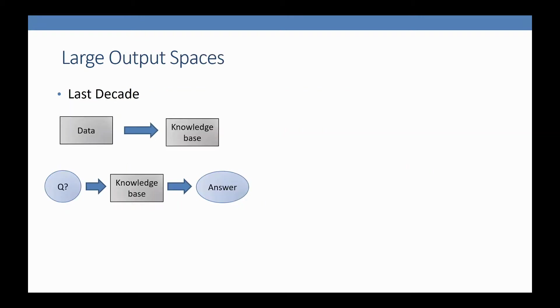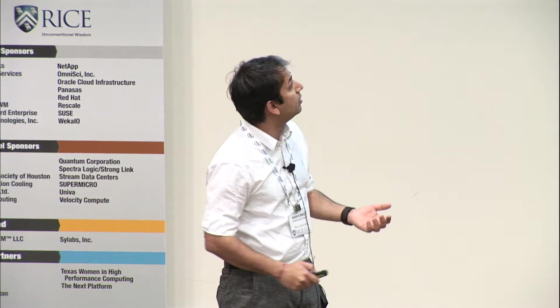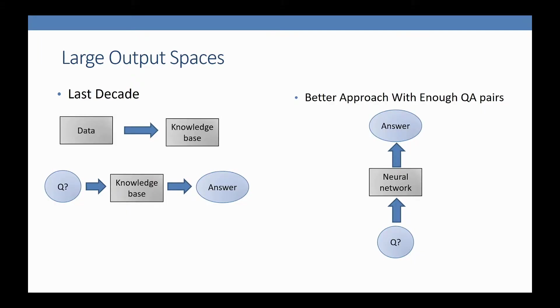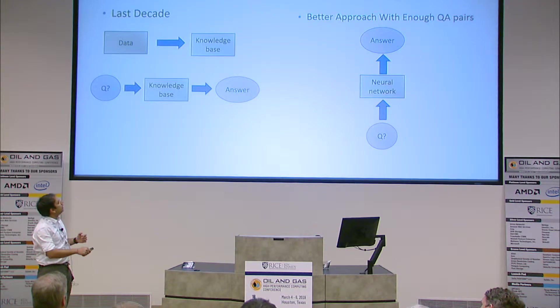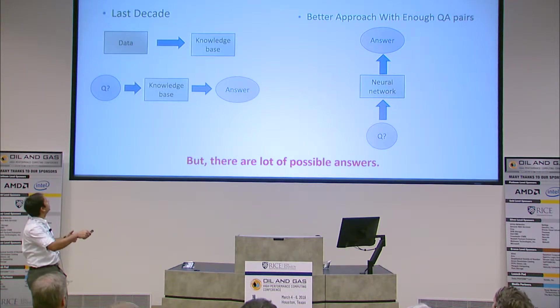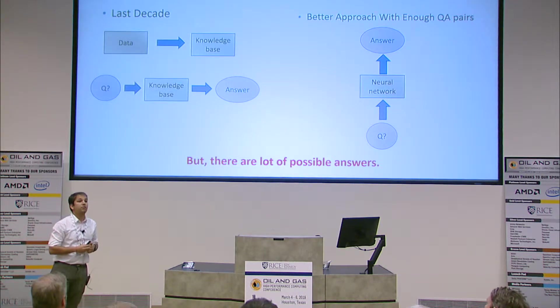In the past decade, we used to have data and create a knowledge base. If I want to do question answering, I show the question to the knowledge base and get the answer. Now this has been changing. The example is question answering and machine translation—if you have enough question-answer pairs, and enough means really large amounts, you take a very large neural network, show it enough pairs, train it, throw it at whatever hardware you have, and this leads to much better results.